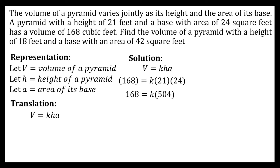Simplifying by multiplying the height and area, we get 168 is equal to K times 504. Dividing both sides by 504, we have 168 divided by 504 equals K. Simplifying, K is equal to one third.